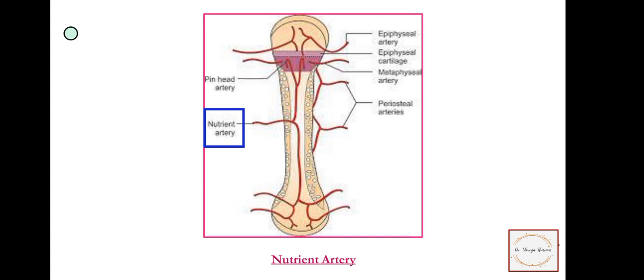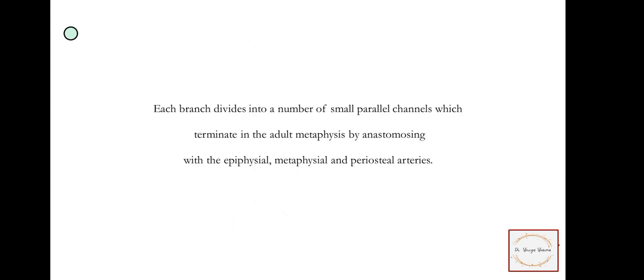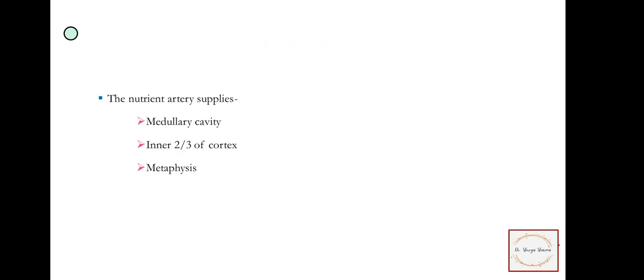Each branch divides into a number of small branches. The ascending and descending branches divide into a number of small parallel channels which terminate in the adult metaphyses by anastomosing with the epiphysial, metaphysial, and periosteal arteries.